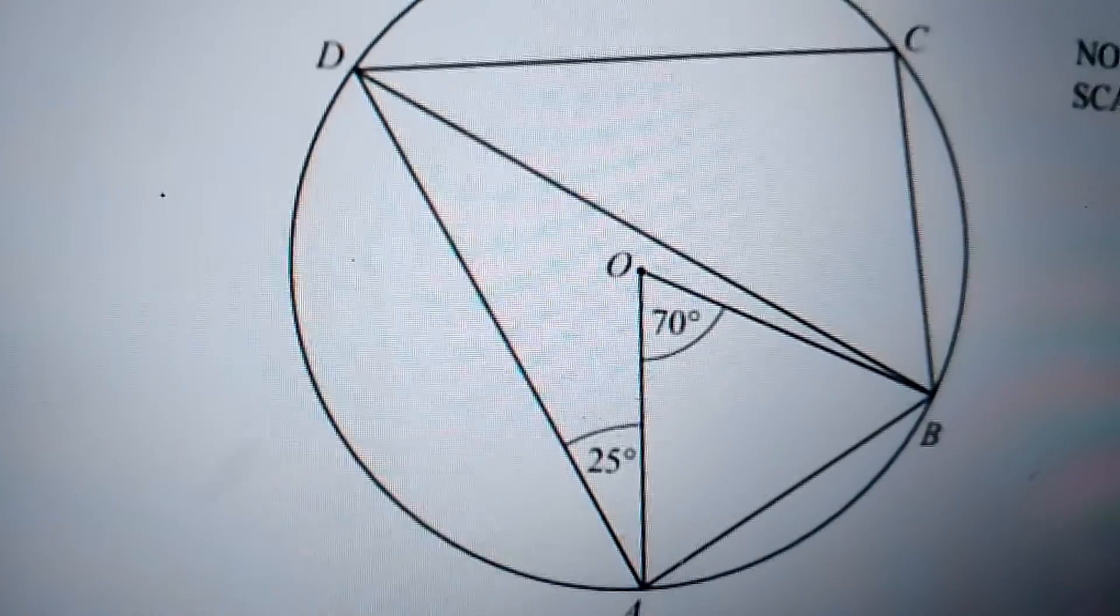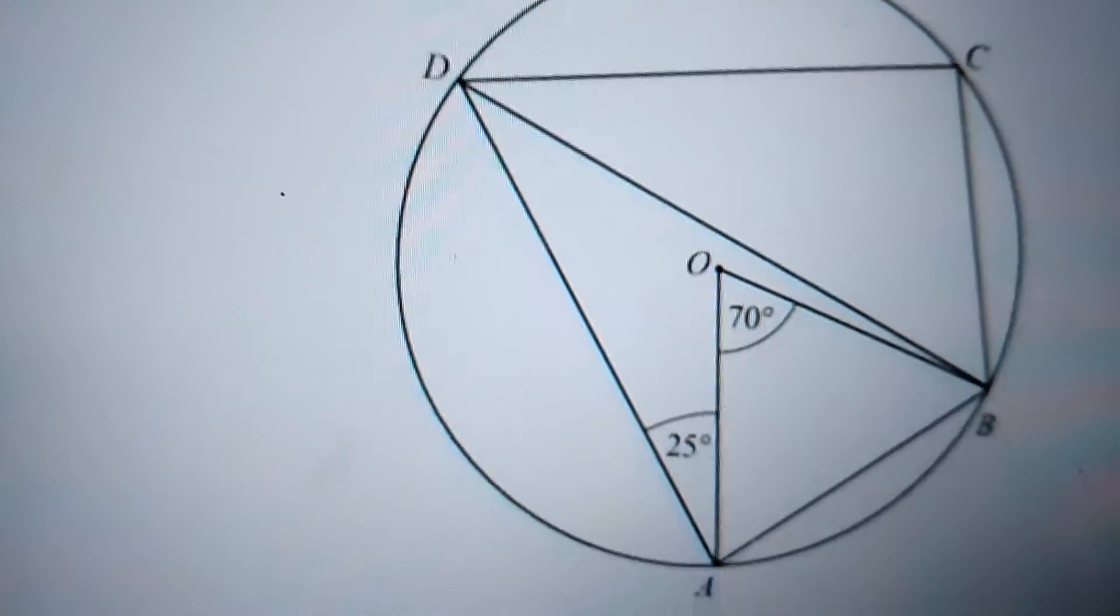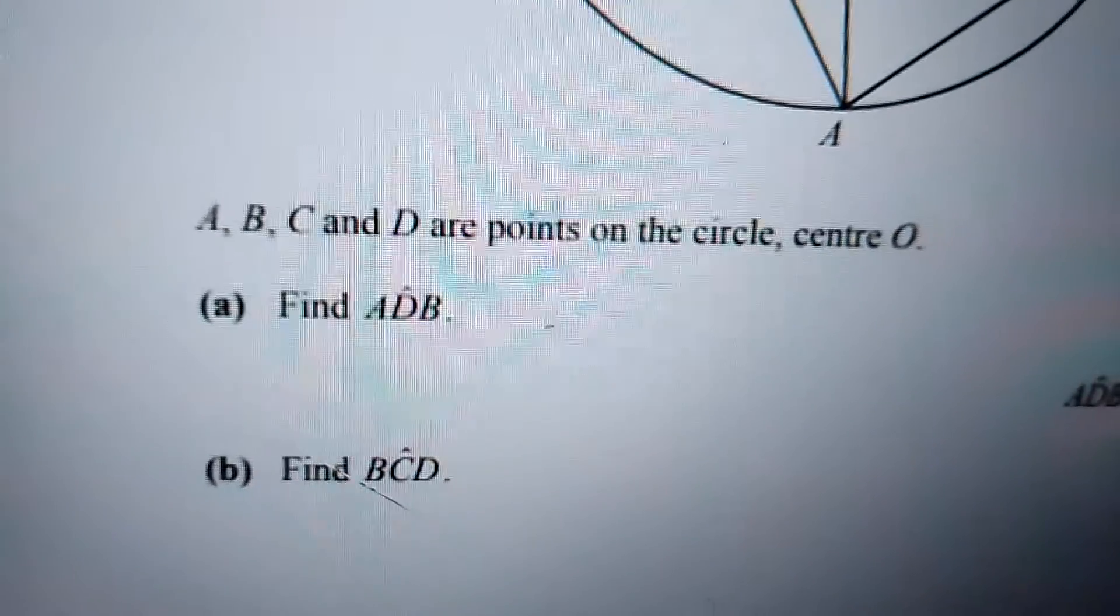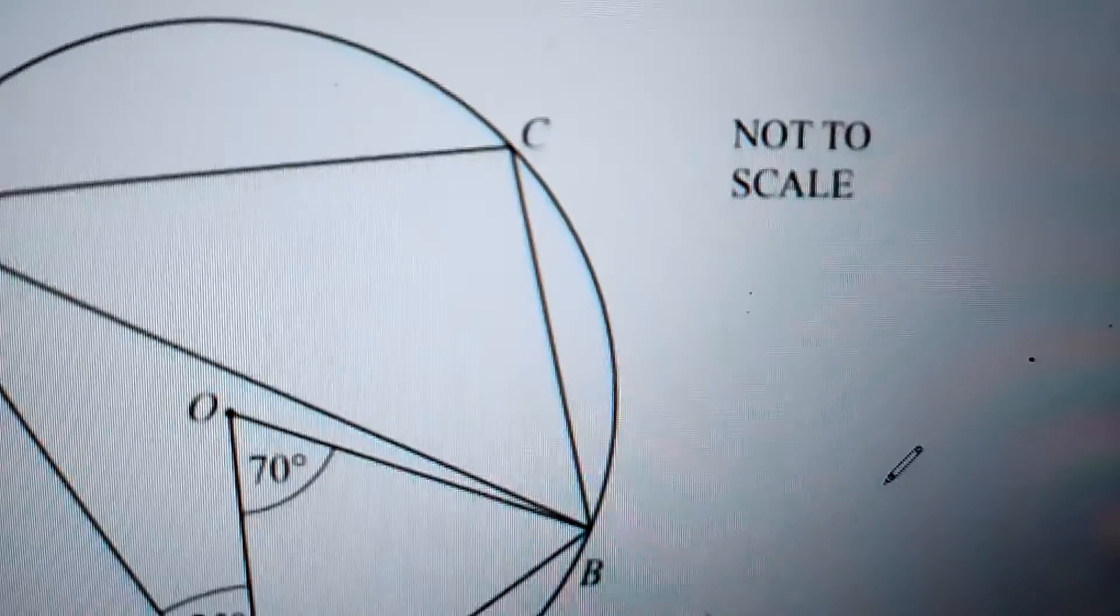That is your answer. ADB is 70 divided by 2, which is 35 degrees. Now, BCD is the angle over here.